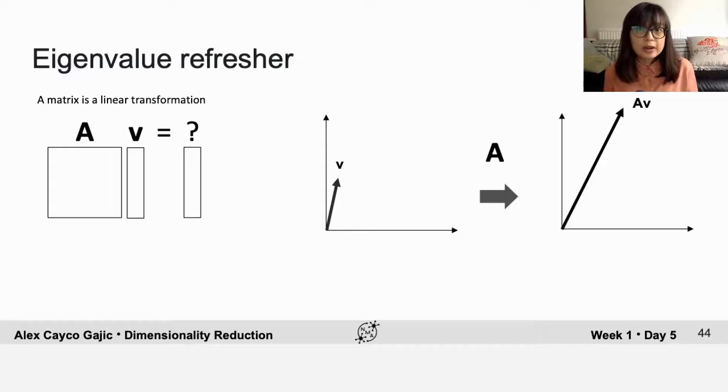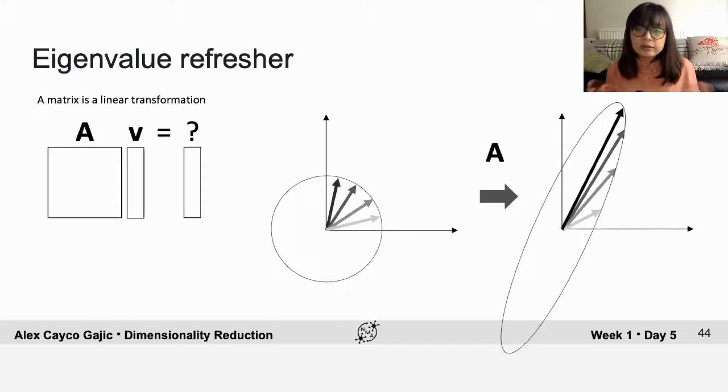Let's take a second for an eigenvalue refresher. Recall that a matrix can be seen as a linear transformation from an n-dimensional vector to another n-dimensional vector if we're talking about a square matrix. Here we have v that is transformed into a new vector A times v, and this new vector is typically pointing in a different direction and has a different magnitude from the original vector v. You can do this for all vectors in the vector space, and you might notice that sometimes there are some vectors that after transformation are still pointing in the same direction but have a different magnitude. These are called eigenvectors.